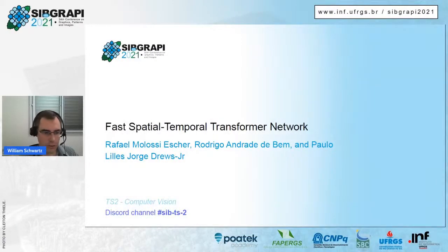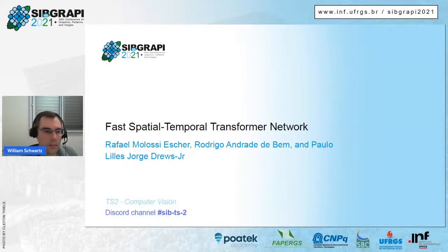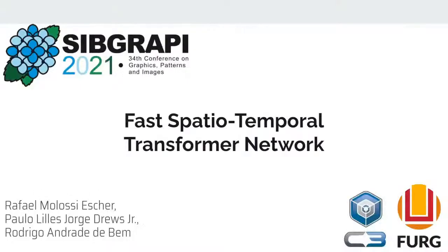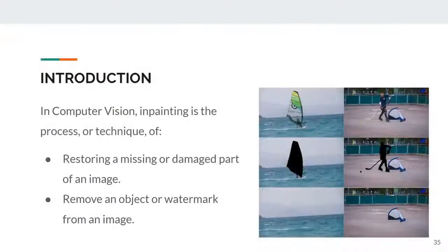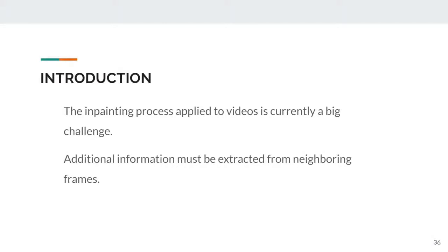Now we go to the fourth paper of this session, from Federal University of Rio Grande: Fast Spatial Temporal Transformer Network. In this presentation, we introduce the Fast Spatial Temporal Transformer Network, a deep network for video inpainting. In computer vision, inpainting is the process of restoring a missing or damaged part of an image, or removing an object or watermark from an image.